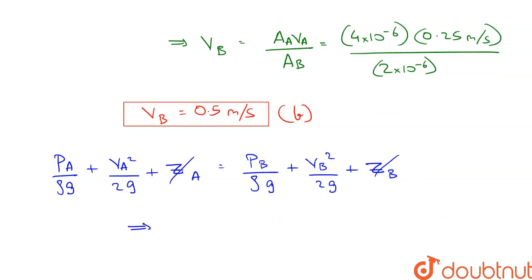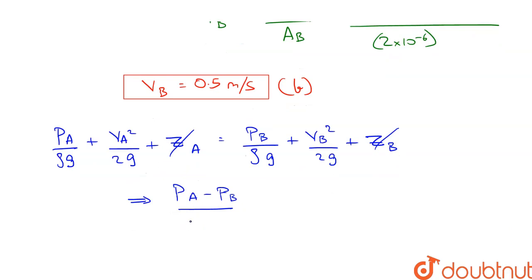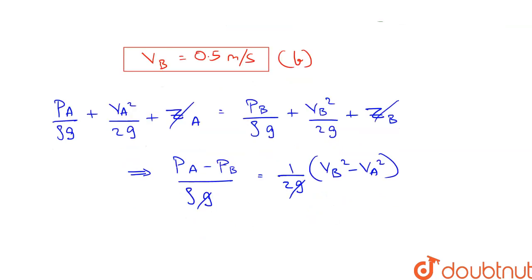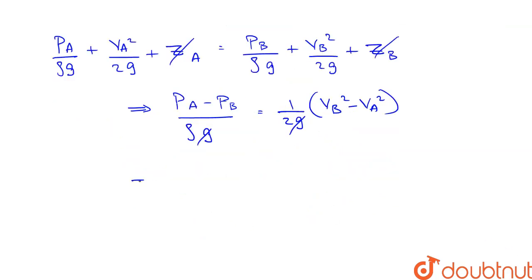So after rearranging, we get PA minus PB upon Rho G is equal to 1 by 2G into VB square minus VA square. So PA minus PB is equal to Rho upon 2 into VB square minus VA square.